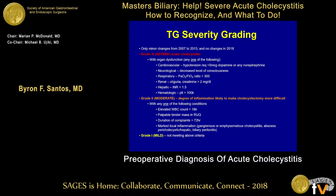Severity grading is really important because there's a whole spectrum of patients with cholecystitis, from very mild disease all the way to very critically ill patients. The criteria proposed in 2007 have not changed significantly. Severe acute cholecystitis involves organ dysfunction across different organ systems. Moderate cholecystitis refers conceptually to cases with a high degree of inflammation making cholecystectomy more difficult — things like a highly elevated white count, a palpable mass in the right upper quadrant, long duration of illness, and radiographic signs such as gangrenous or emphysematous cholecystitis. Mild cases do not meet any of the above criteria.